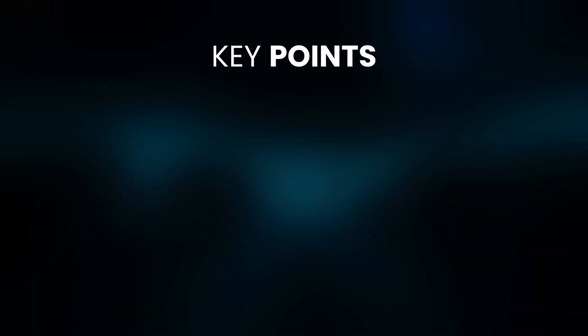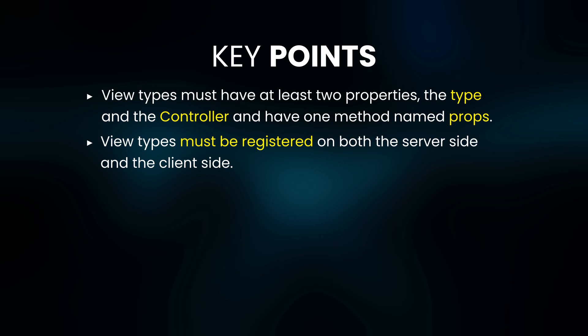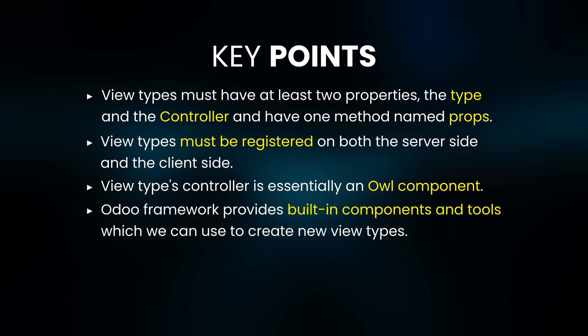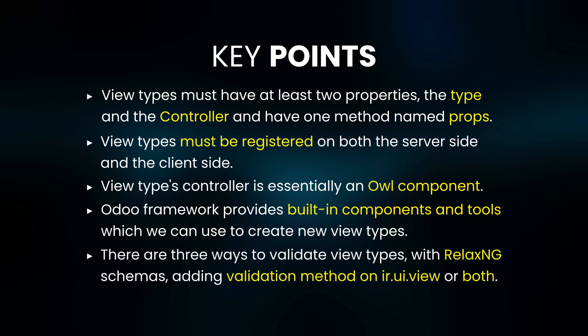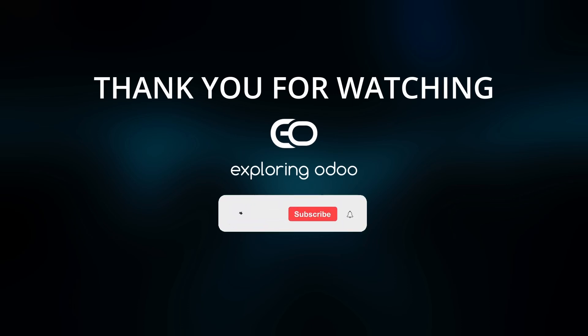Let's summarize what we've learned today. View types must have at least two properties — type and controller — and one method named props. View types must be registered on both the client side and the server side. The view type controller is an OWL component — we can treat it just the same as other OWL components. Odoo framework provides built-in components and tools which we can use to create new view types effectively. We can validate the arch field of the view type using RELAX NG schemas and by adding a validation method on the UI view model. Thank you for watching, and don't forget to like and share this video and subscribe to my channel.